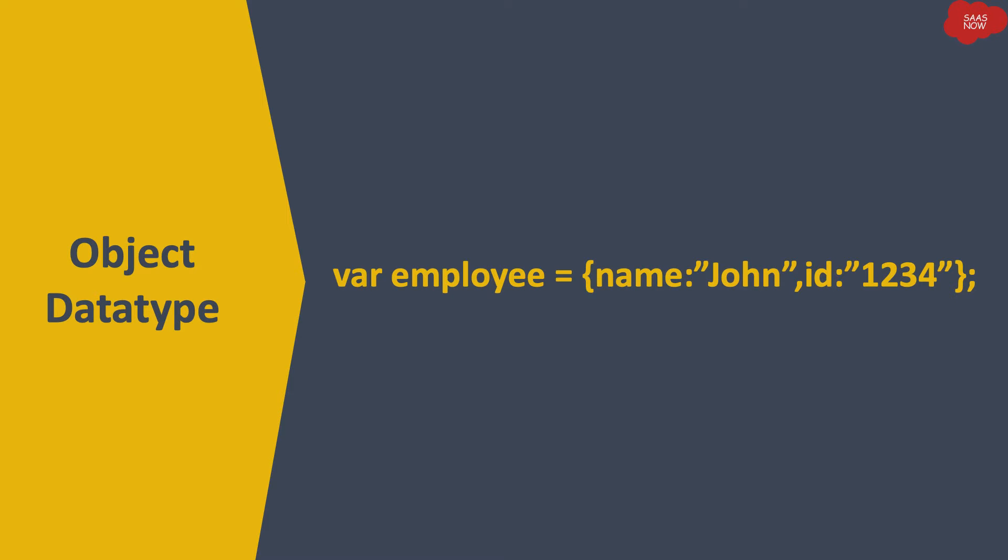Object data type has properties in pairs of name and value inside curly brackets, separated by commas. Here 'employee' is an object data type variable which stores a property name with value 'John', and another property 'id' which can be the employee ID with its corresponding value.